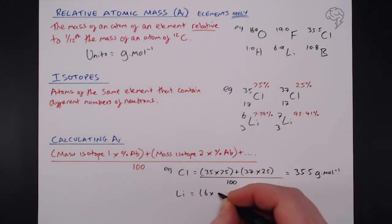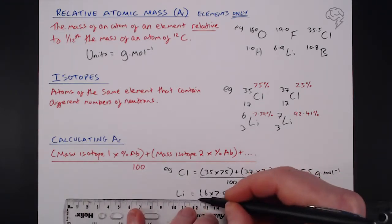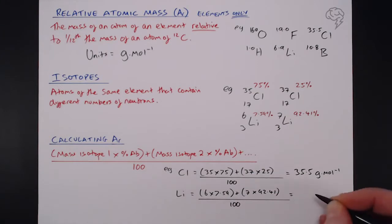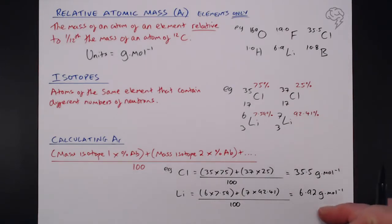that's basically 6, multiplied by 7.59, plus isotope 2, multiplied by 92.41, and again, all over 100, and that gives us 6.92 grams per mole, which is a little more accurate than what you get in your periodic table, but you will find that, of course, that's your double check if you're ever calculating these.